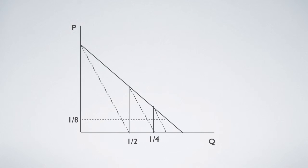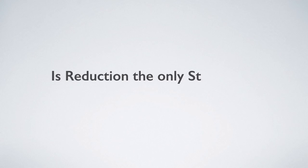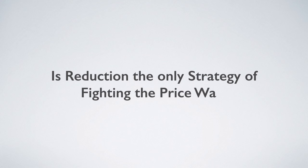The first duopolist then retaliates and captures one eighth, and so on. Is reduction the only strategy for fighting the price war?